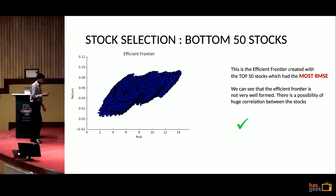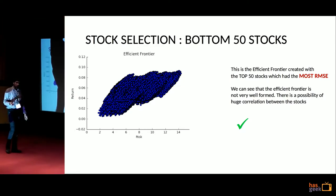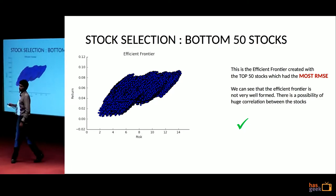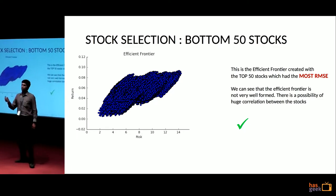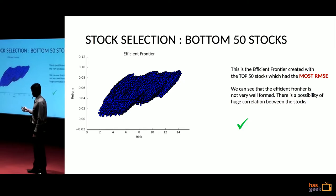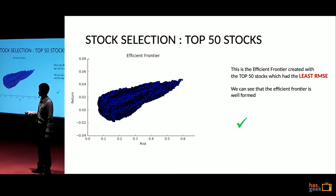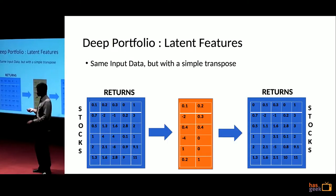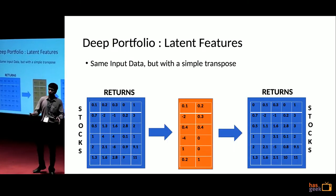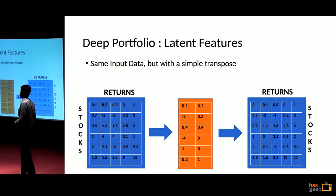There is a paper that tells us that for constructing a portfolio, you need both types. The ideal way is to take a mix of high-performance stocks and a combination of stable stocks. Using neural networks, we have segregated the stocks we'd want to use for portfolio construction.